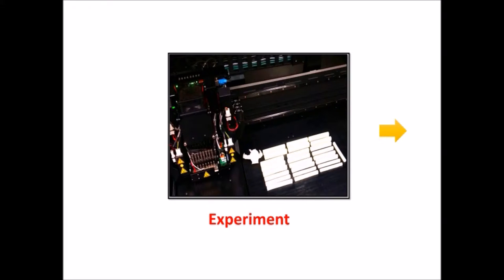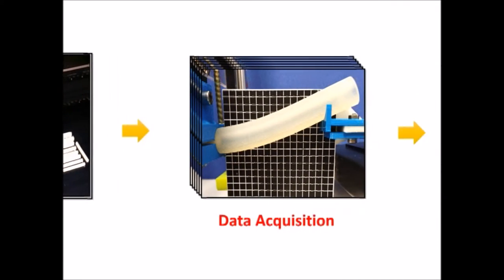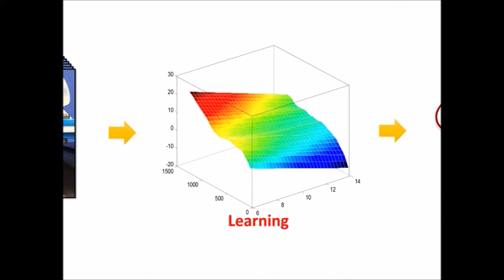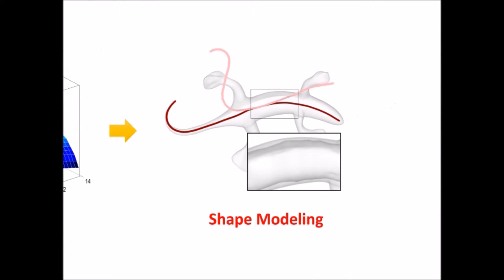We first print a set of cylinders for testing, then measure their bending behaviors. We learn the elastic property in a network, and finally, we thicken the model to match the elastic behavior.